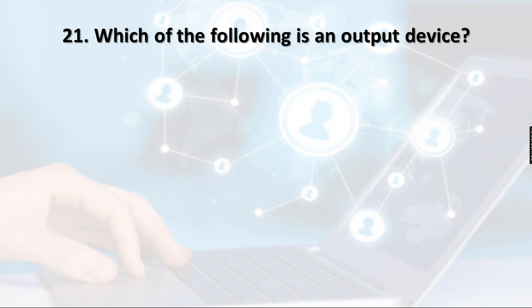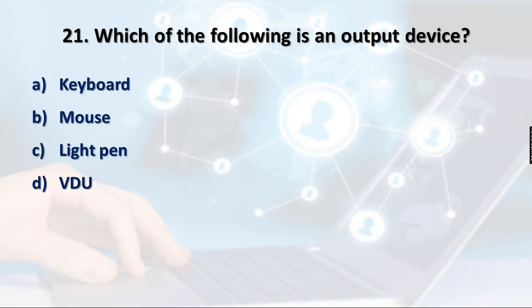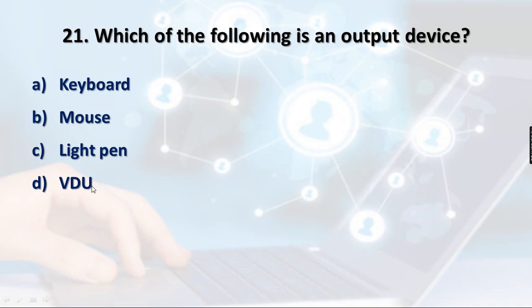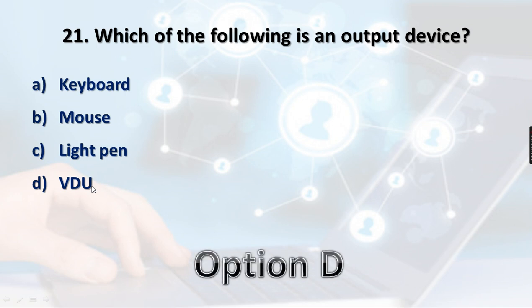Question 21: Which of the following is an output device? Options: Keyboard, Mouse, Light pen, VDU. Keyboard is used for input, mouse is used for input (cursor movement), and light pen can be used for drawing or signatures — all are input devices. VDU (Visual Display Unit) is an output device — it is the screen you are currently viewing. So option D, VDU, is the right answer.